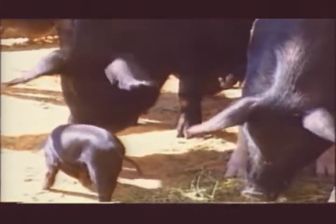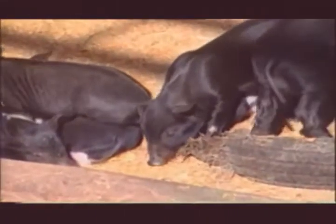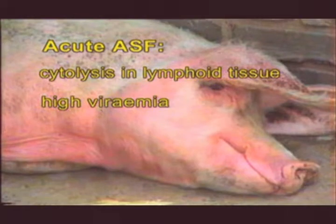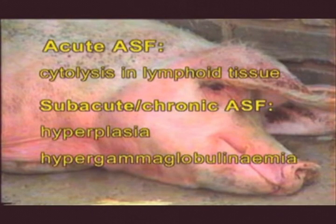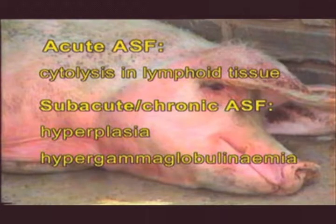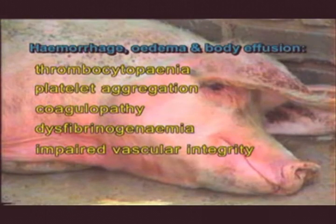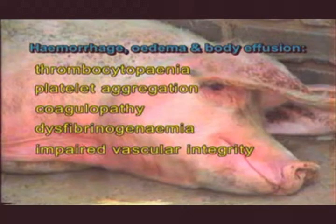In domestic pigs, infection usually occurs either via the bites inflicted by infected tampans or by ingestion of virus-contaminated feedstuffs. In the latter case, initial infection occurs in the tonsils or dorsal pharyngeal mucosa, from where it spreads to the mandibular or retropharyngeal lymph nodes. Thereafter, hematogenous spread occurs and levels of viremia may reach 100 million infectious doses per milliliter of blood. The virus has a predilection for the antigen-presenting cells of the lymphoreticular system. In acute cases these cells undergo cytolysis, while in chronic and subacute cases these cells become hyperplastic, often accompanied by hypergammaglobulinemia. The cause of hemorrhage, edema and effusion into body cavities in acute cases is complex but involves thrombocytopenia and platelet aggregation with concomitant coagulopathy and dysfibrinogenemia, as well as impaired vascular integrity.